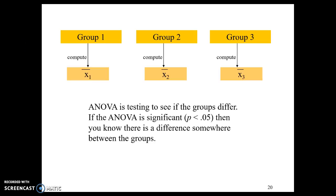This is part two of analysis of variance. So we have three different groups, group one, two, and three, and we are going to compute a mean for each of these three.